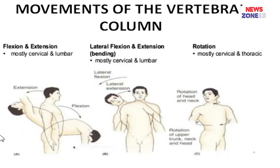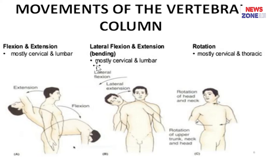Regarding movements of the vertebral column: for a single vertebra the movement is restricted, but in the total articulated vertebral column there is a wide range of movement. Movements include flexion and extension, which mostly occur in the cervical and lumbar regions; lateral flexion, which also mostly occurs in the cervical and lumbar regions; and axial rotation, which mostly occurs in the thoracic region.